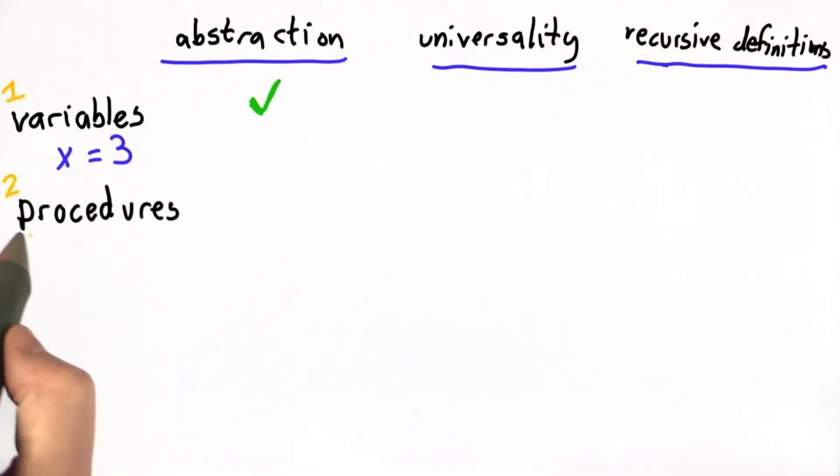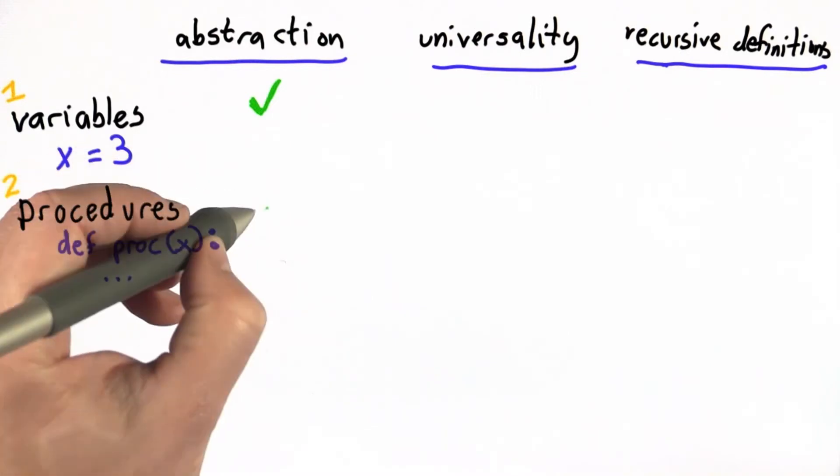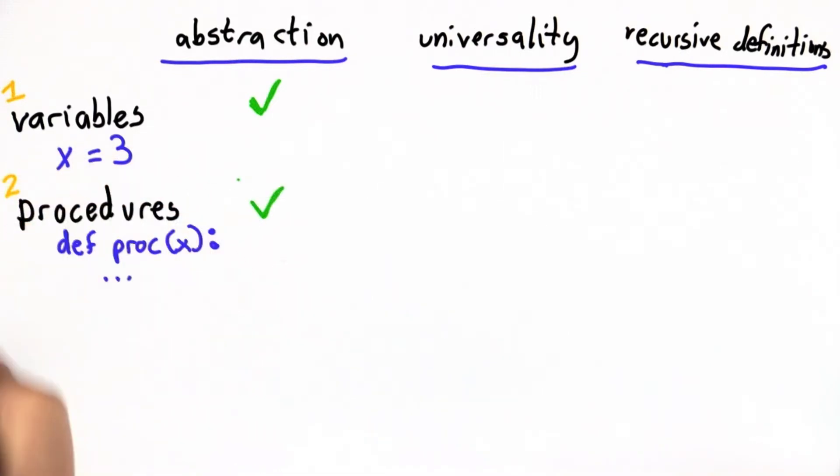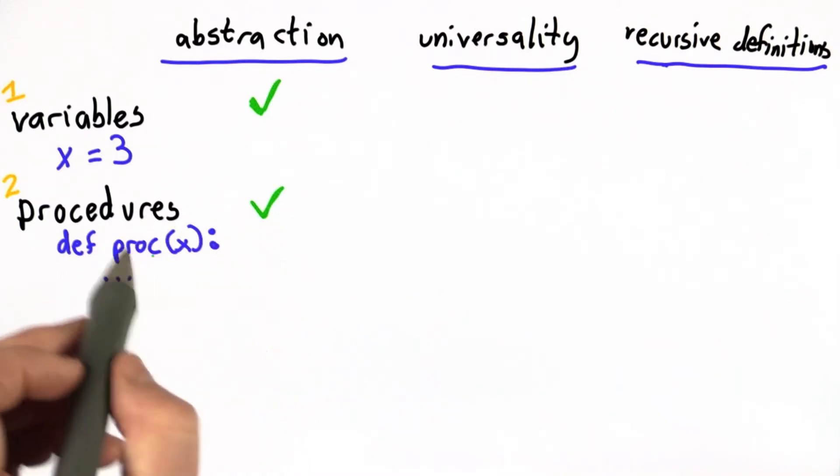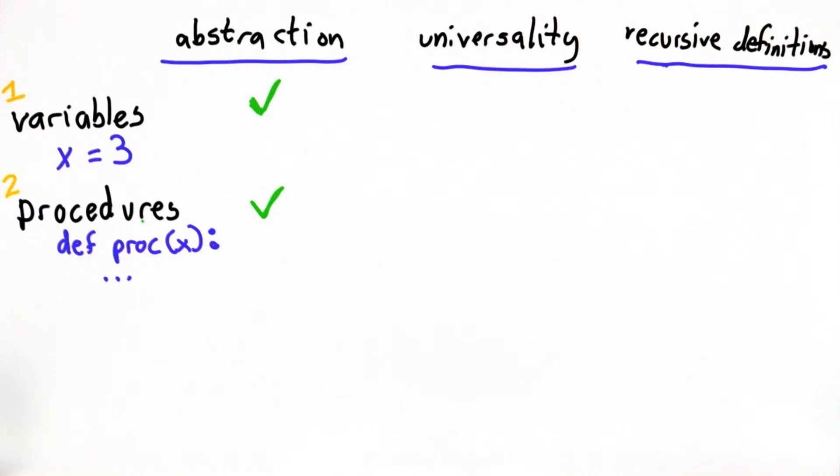In Unit 2, we introduced procedures. And a procedure is definitely a kind of abstraction. By making the parameter to a procedure, we can have code that we write once that does many different things, and we can hide all those details when we use the procedure.